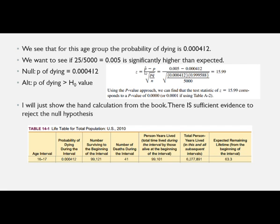The sample probability is 0.005, and the hypothesized population parameter is 0.000412. Then we compute P times Q — the probability times its complement — divided by the sample size n, and take the square root. Doing all that math gives us a Z-score of 15.99. We know that a Z-score of 15 or 16 is huge, so we don't really even need to look at table A2. The probability is essentially zero — about 0.0001. So we reject the null hypothesis and conclude that for this particular group, 25 deaths out of 5,000 sixteen-to-seventeen-year-olds is significantly higher than the probability for the cohort of 100,000 babies in this life table.